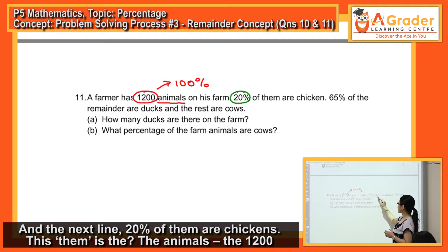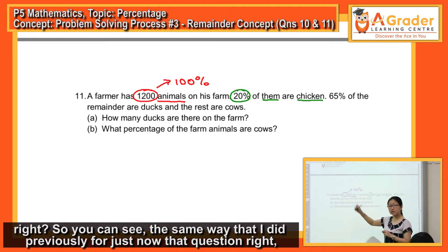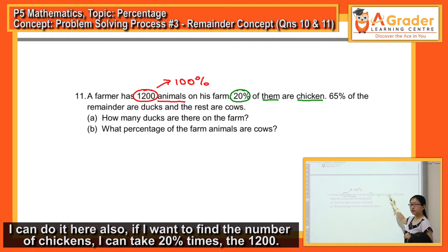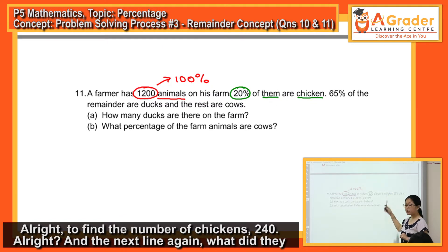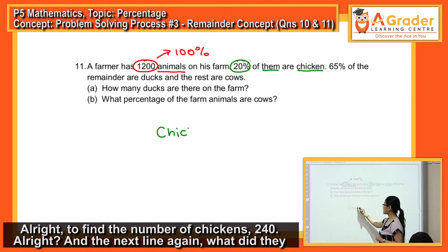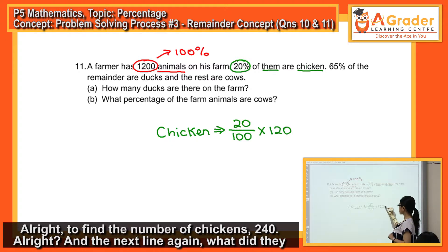And the next line: 20% of them are chicken. This 'them' is the animals, the 1200, right? So you can see the same way that I did previously for the last question. I can also do it here. If I want to find the number of chicken, I can take 20% times the 1200. So to find the number of chickens: 20/100 × 1200 = 240.